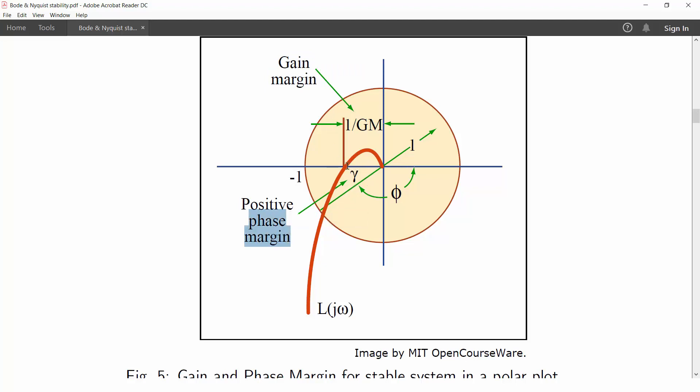For phase margin, it is the angle through which if the curve is rotated, which is this here, this will bring it to the verge of instability. And thus this is the phase margin.